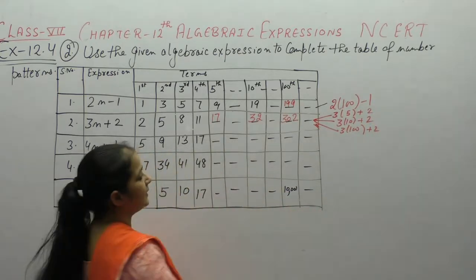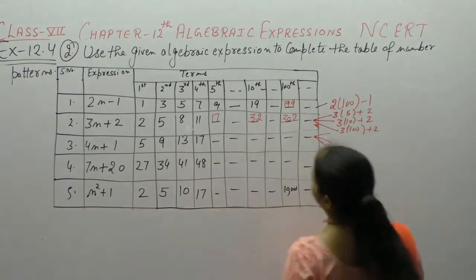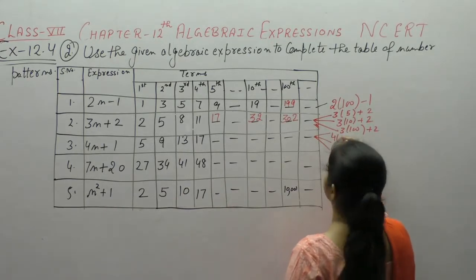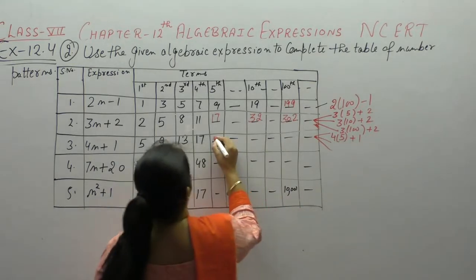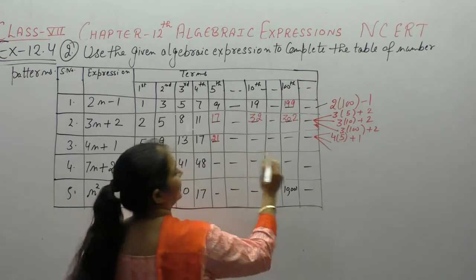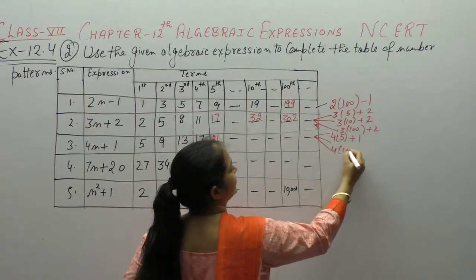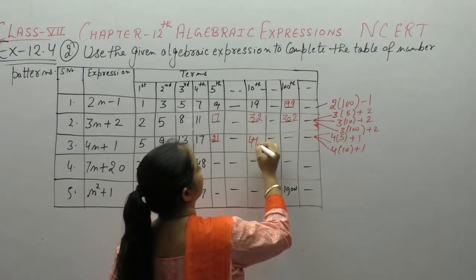Okay? Now, अगला pattern हमारे पास कौन से है? 4n plus 1, n की value 5. 20 plus 1, 21. n की value 10, 40 plus 1, 41.